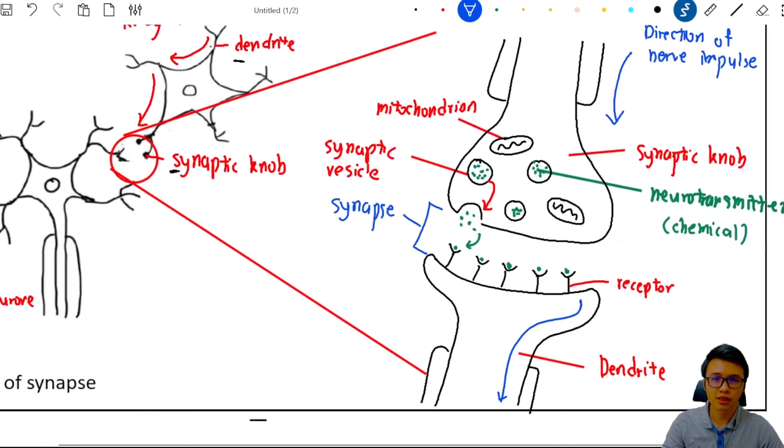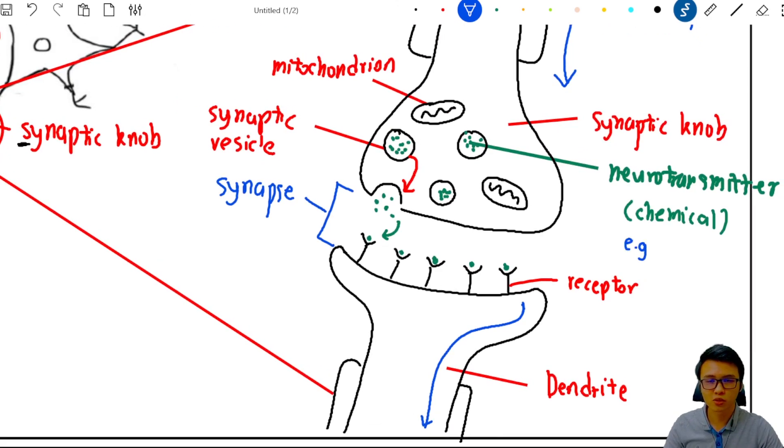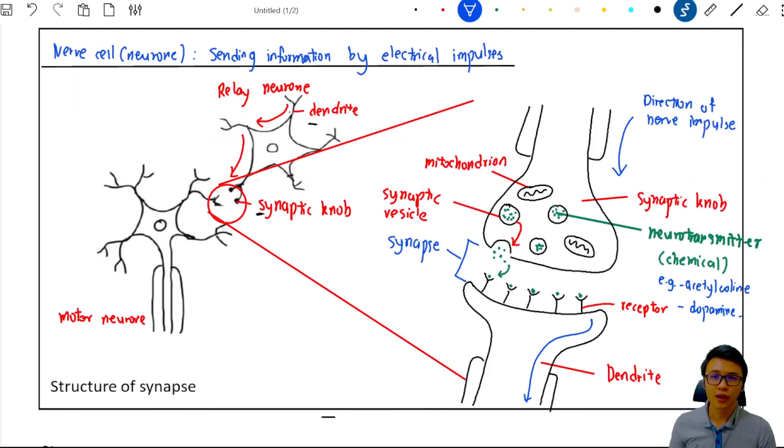Remember that you guys must at least memorize one or two types of neurotransmitter. I would suggest you guys to memorize acetylcholine and dopamine. Okay, hope you guys enjoyed this video and I will see you in the next video. Bye-bye.